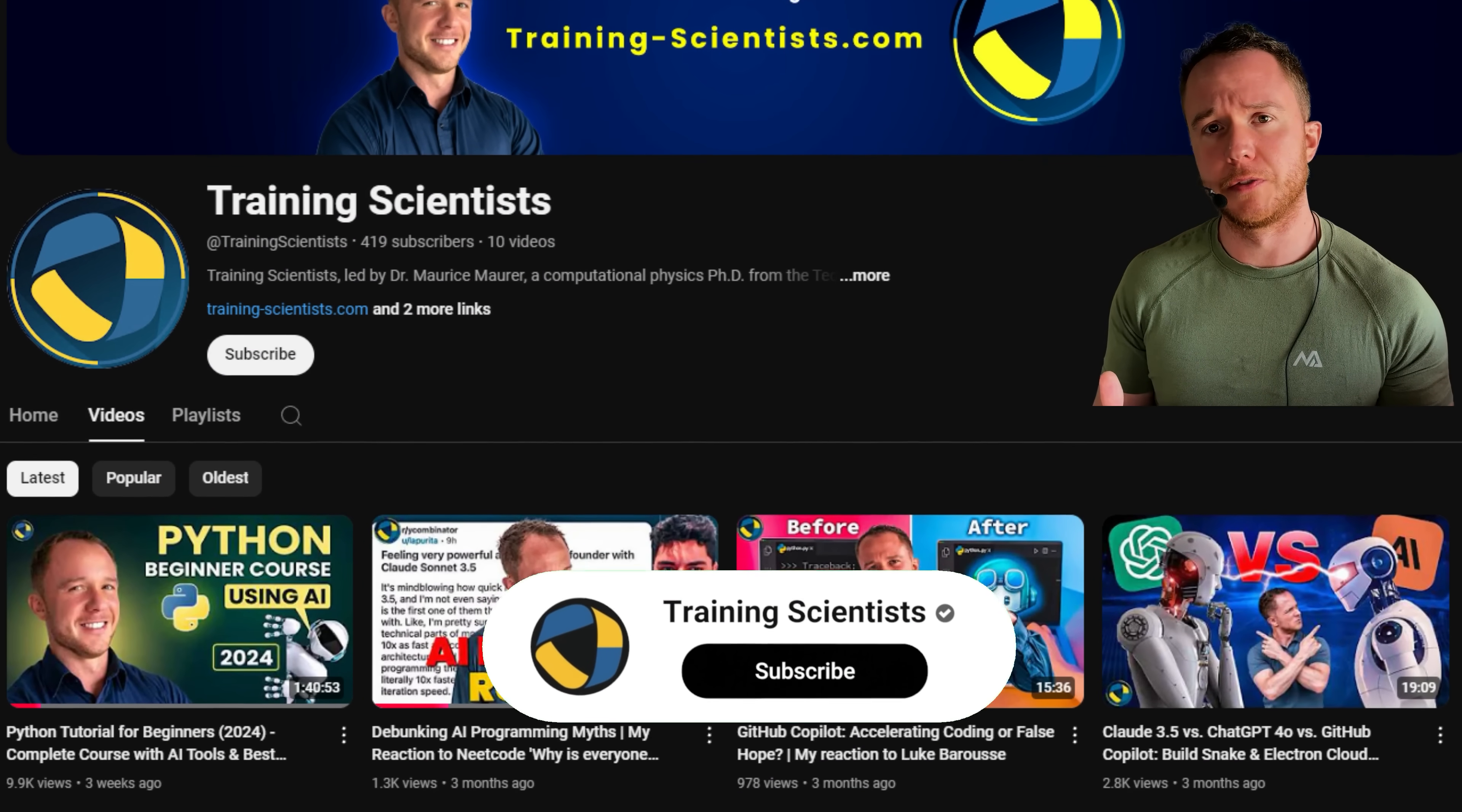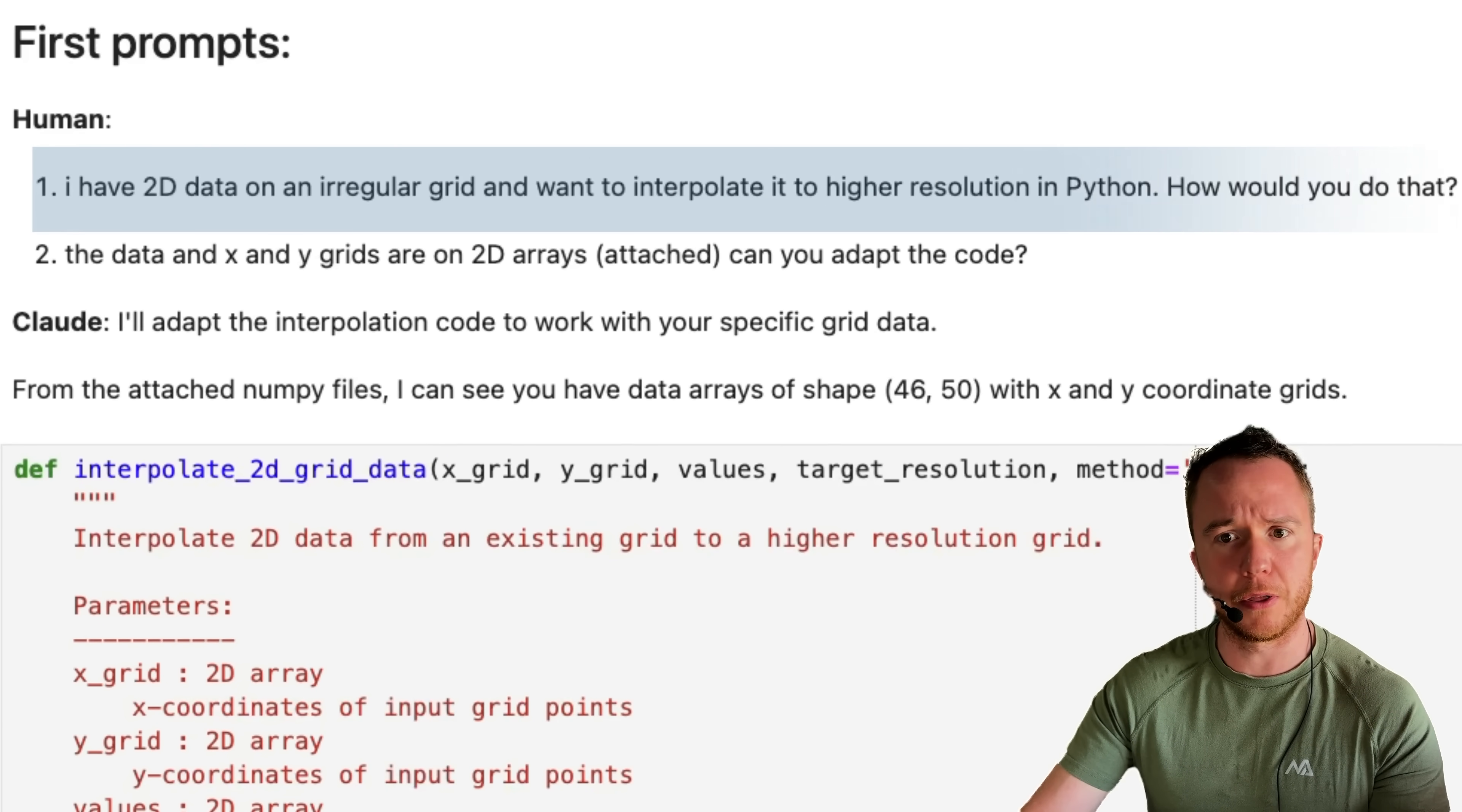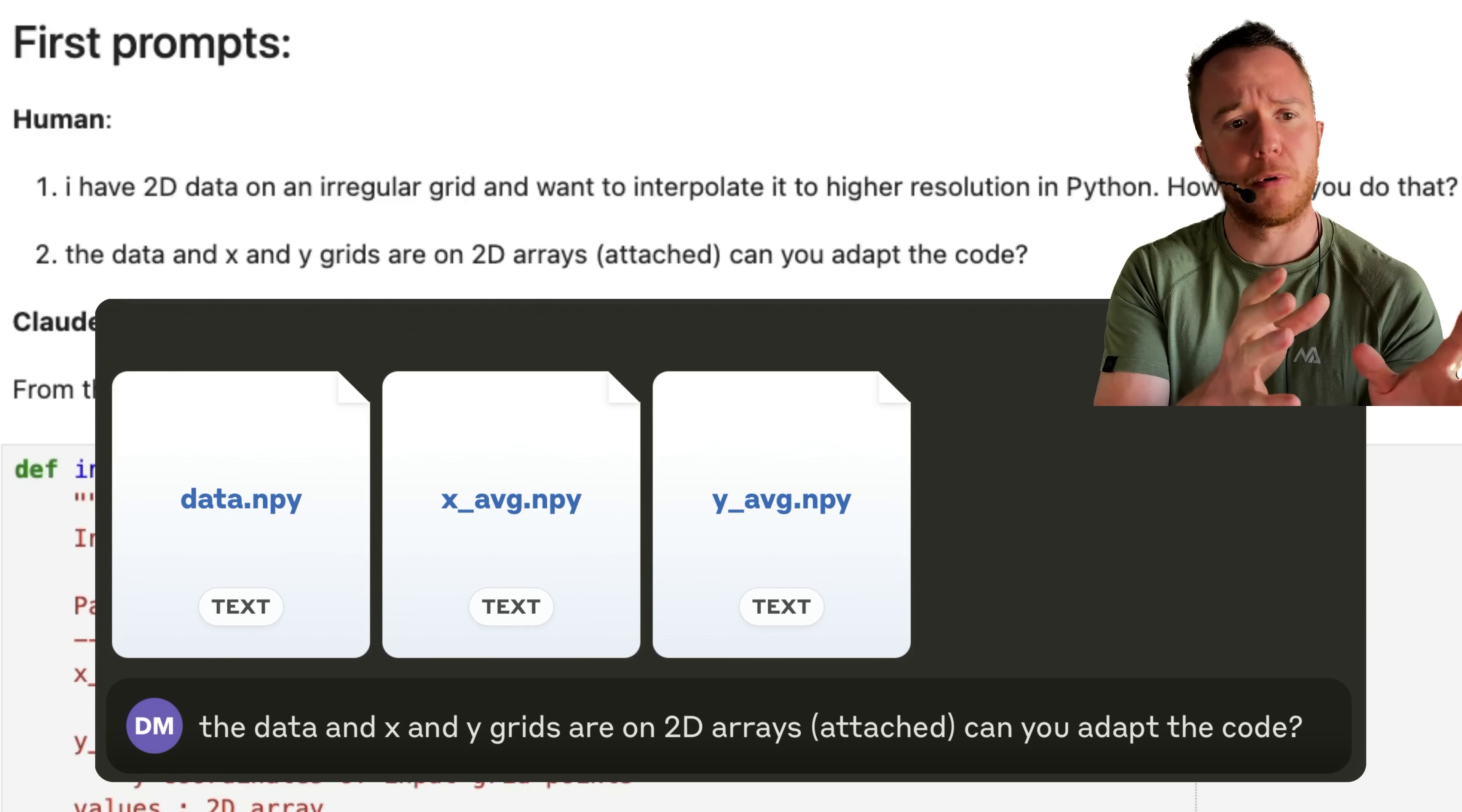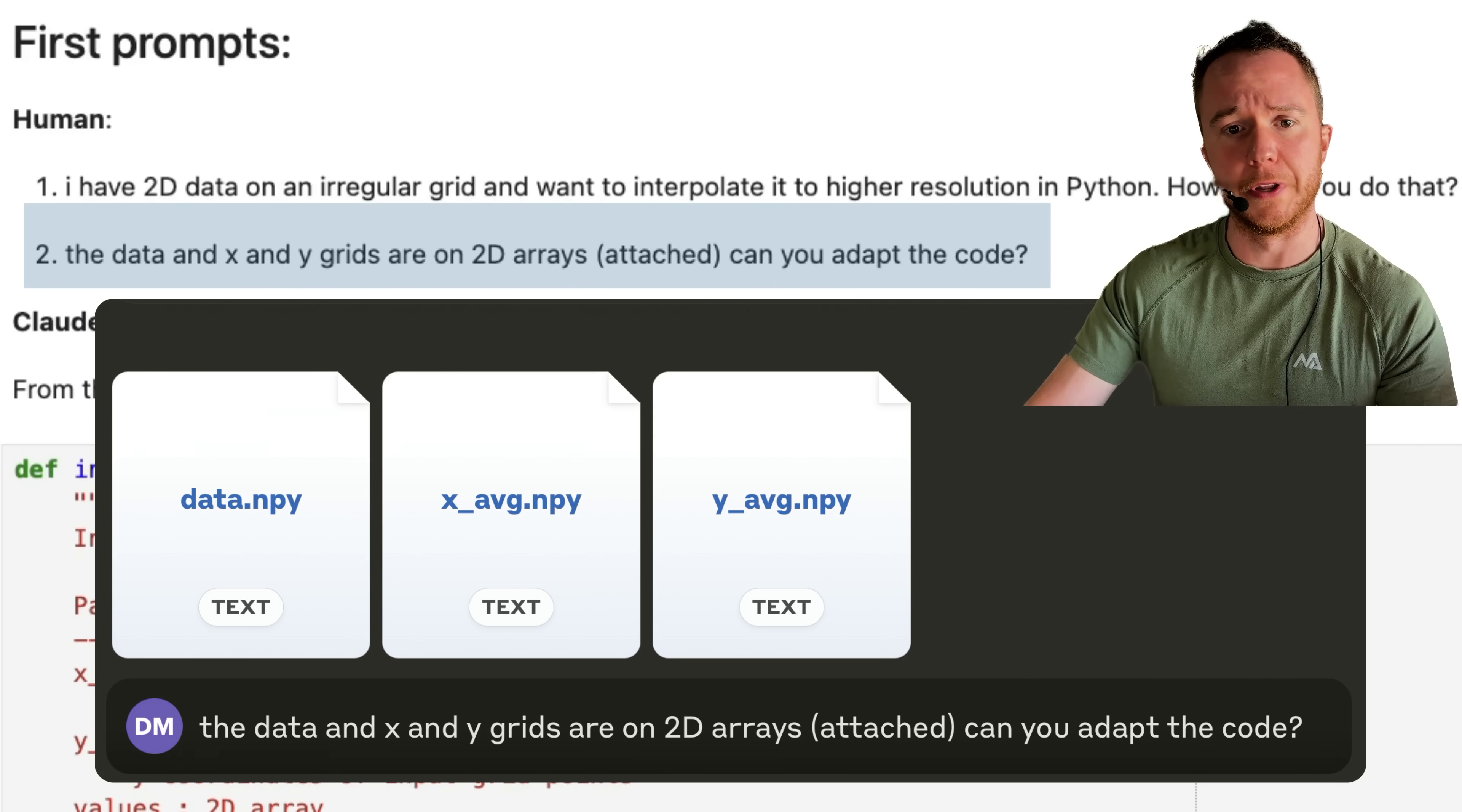If you've seen any of my previous videos, you know I like to use AI tools to speed up the coding process. So in the first attempt, I prompted it: I have 2D data on an irregular grid and want to interpolate it to a high-resolution in Python. How would you do that? It gave me some code that wasn't really adapted to the data, so in the next step, I actually uploaded the data files. We have the data.npy, the x_grid.npy, and the y_grid.npy.